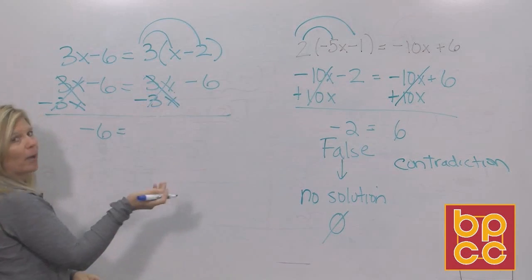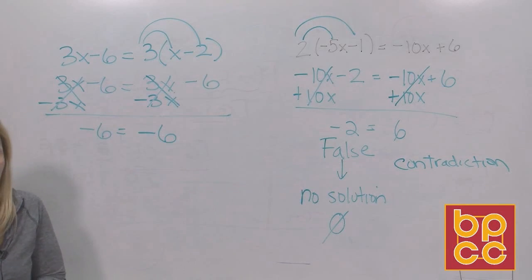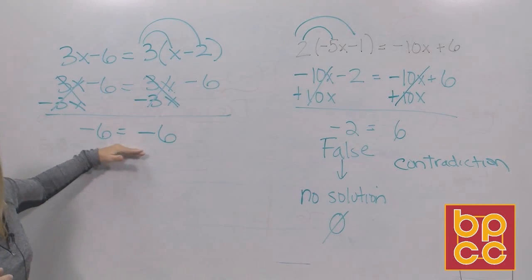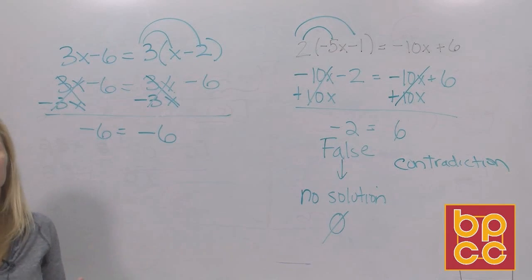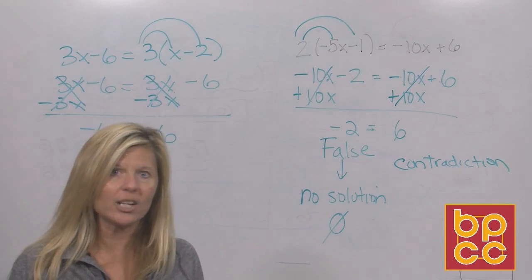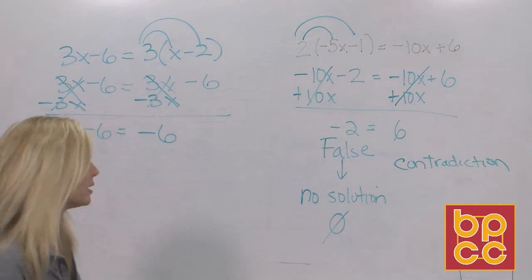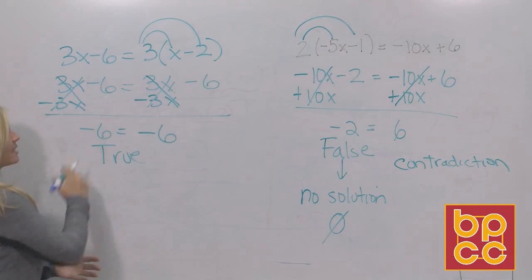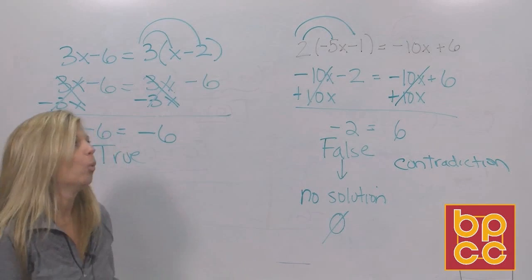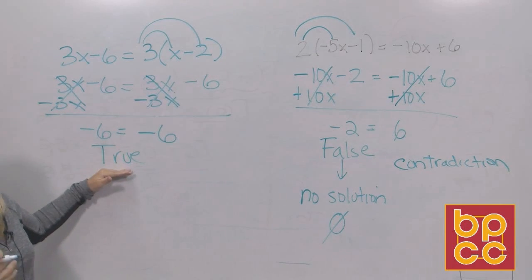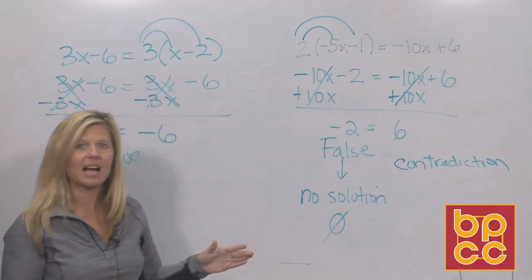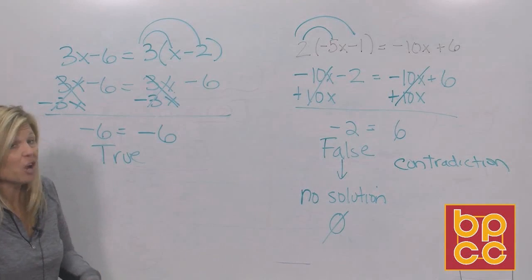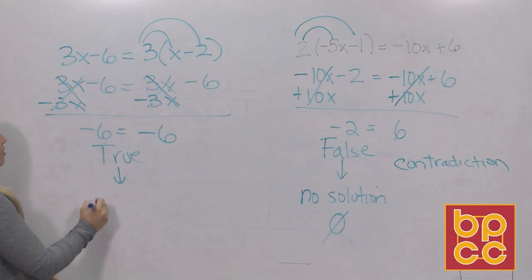3x minus 3x is zero on both sides, so it cancels out, leaving negative 6 equals negative 6. Like Little Bo Peep, you have lost your variable — this does not say x equals negative 6, there is no x. When you lose your variable, you end up with either a true or false statement. Is negative 6 equal to negative 6? Obviously that's true — it's the same number. A false statement meant there was no answer, but a true statement is the opposite: all numbers work.